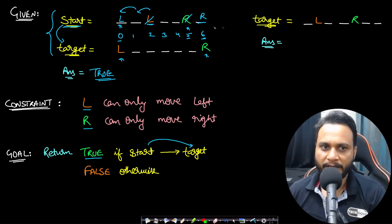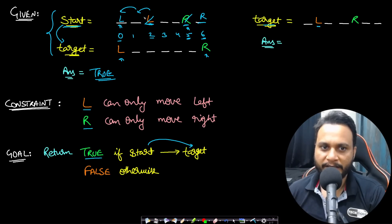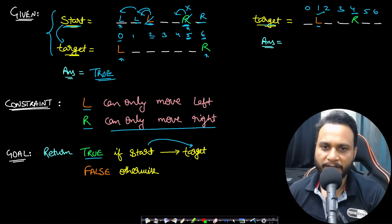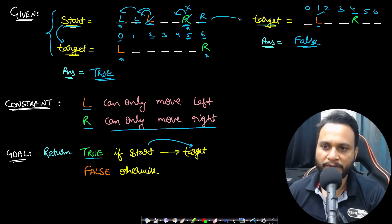In the second example, the L is at index 2 and R at index 5 in start. The target says L must be at index 1 — we can do one swap to move L to index 1, so that matches. But the R which is at index 5 in start needs to be at index 4 in target. This is not allowed because R can only move to the right. Therefore if there is at least one mismatch, we return false — it is impossible to convert start to target.